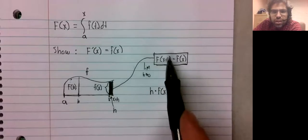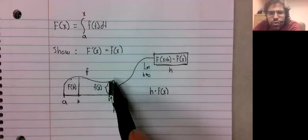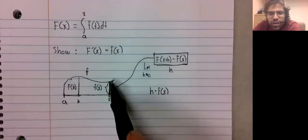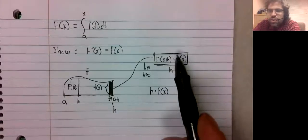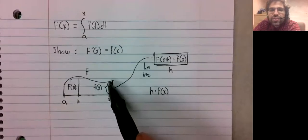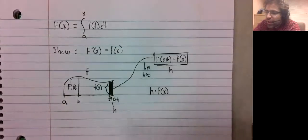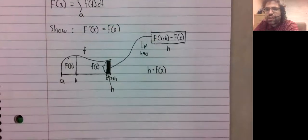It's not exactly equal. You see this sliver of white up here. F of x plus h minus f of x is the area of this entire region, including this white sliver. The sliver isn't in the rectangle.